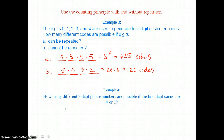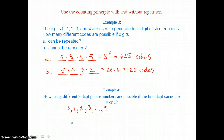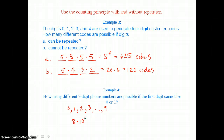In example four, how many different seven-digit phone numbers are possible if the first digit cannot be zero or one? We know that in our number system we have ten digits, zero through nine. Since we can't use zero and one for the first digit of that seven-digit phone number, we only have eight choices for that first digit. For the second digit and every digit after that we have ten choices — ten choices six times. So the product is eight times ten to the sixth power, or eight million different seven-digit phone numbers possible.